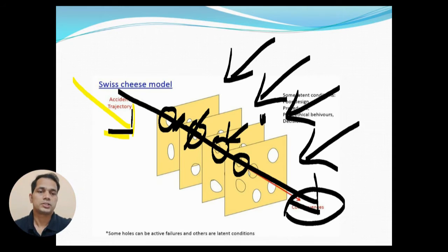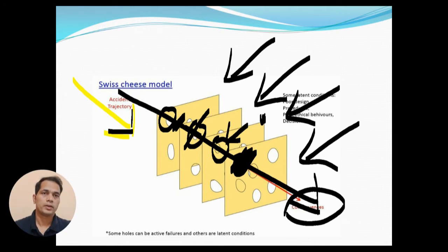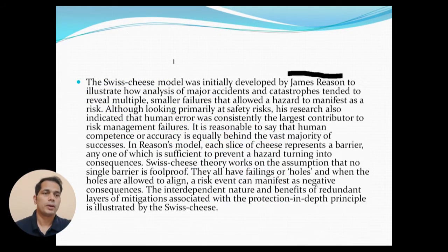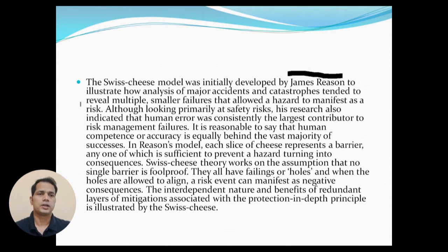Consider the last cheese slice — if that barrier had prevented the line from passing through, the entire accident or incident would not have taken place. This model was initially developed by Mr. James Reason to illustrate how analysis of major accidents and catastrophes tended to reveal multiple smaller failures that allowed a hazard to manifest as a risk.